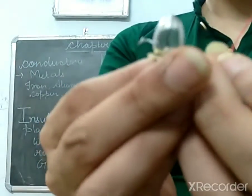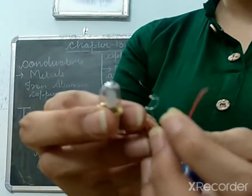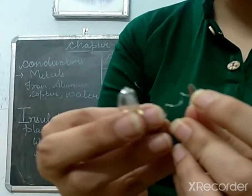If the bulb glows, it means this wire is a conductor because it's passing electricity. So let's find it out.